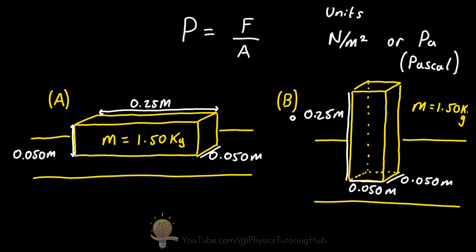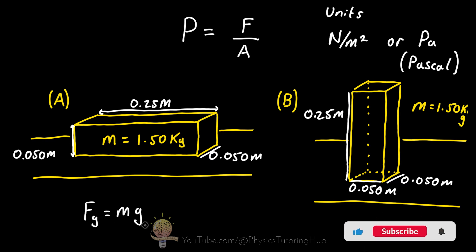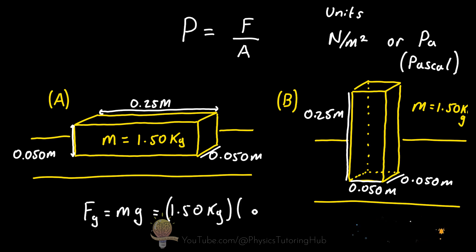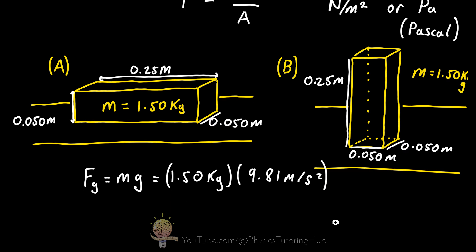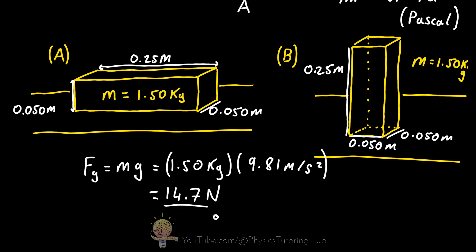We're interested in how much force is being applied over a given area. If we know the mass of these blocks, we can calculate the gravitational force acting on them. This force equals their weight — mass multiplied by the acceleration due to gravity. Their force value due to weight is equal to 14.7 newtons. We have the force and can add it into our pressure equation.